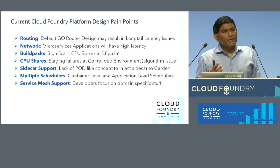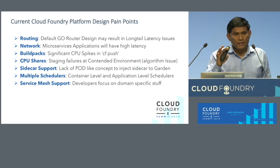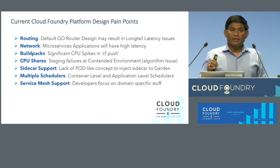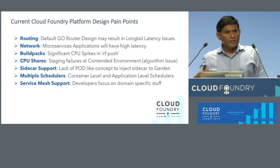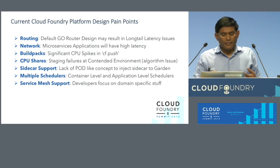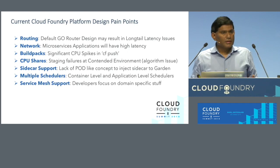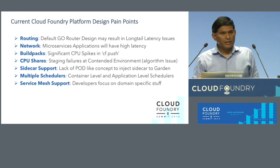When it comes to buildpacks, during a CF push you may see a sudden spike in CPU. That's mainly because of how the current buildpack mechanism and flat file system works. You may also see CPU sharing issues with the default CPU algorithm. In a contended environment you can see staging failures because you don't have enough resources. Also, Garden doesn't have the concept of a pod, so you can't have multiple containers in a pod like Kubernetes does — meaning you can't inject a sidecar, which is essential for supporting Istio.